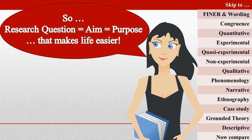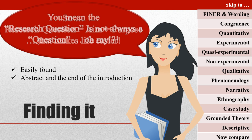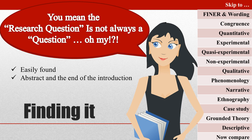The first thing to consider is if you can find the question. A research question is no good if it cannot be found or identified. You shouldn't need to be an expert researcher — the question should appear clearly in the abstract and introduction section of the study, and sometimes right at the beginning of the methods section. The question may be phrased as a question or may appear as a statement of the research purpose or aim.